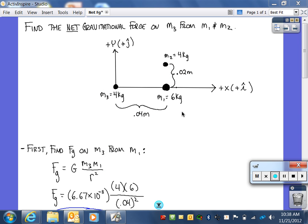In this problem, we will be finding the net gravitational force on M3 from objects M1 and M2. In this picture, we can see that M3 has a mass of 4 kilograms, M1 has a mass of 6 kilograms, and M2 has a mass of 4 kilograms. The separation between the centers of M3 and M1 is 0.04 meters, and between M1 and M2 is 0.02 meters.